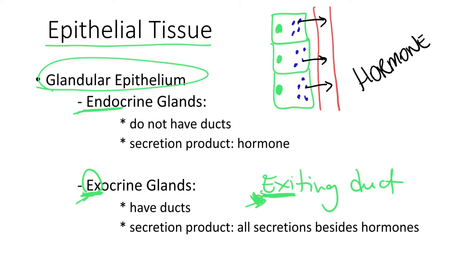Examples of exocrine glands are sweat glands, which produce sweat; sebaceous glands, which produce oil; mucus glands that produce mucus; and salivary glands that produce saliva, which is a mixture of mucus and digestive enzymes. So, all glands that are not producing hormones are exocrine glands.